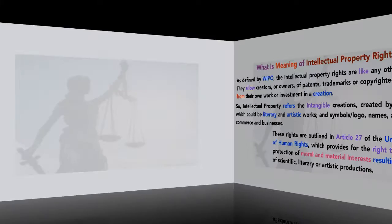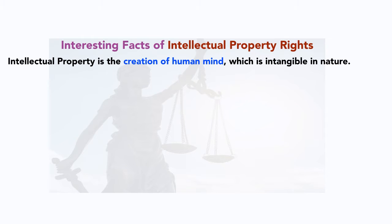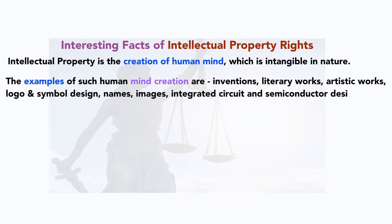Now let's check out the interesting facts of intellectual property rights. Intellectual property is the creation of the human mind, which is intangible in nature. Examples of such human mind creations include inventions — which could be a machine or medicine, anything new you created. Next are literary works such as poems, articles, novels, and movie scripts. Then artistic works like paintings and photographs. Also logo and symbol design — the company's logo and symbol. Names, company names, images, integrated circuit and semiconductor designs — all these are considered intellectual property.